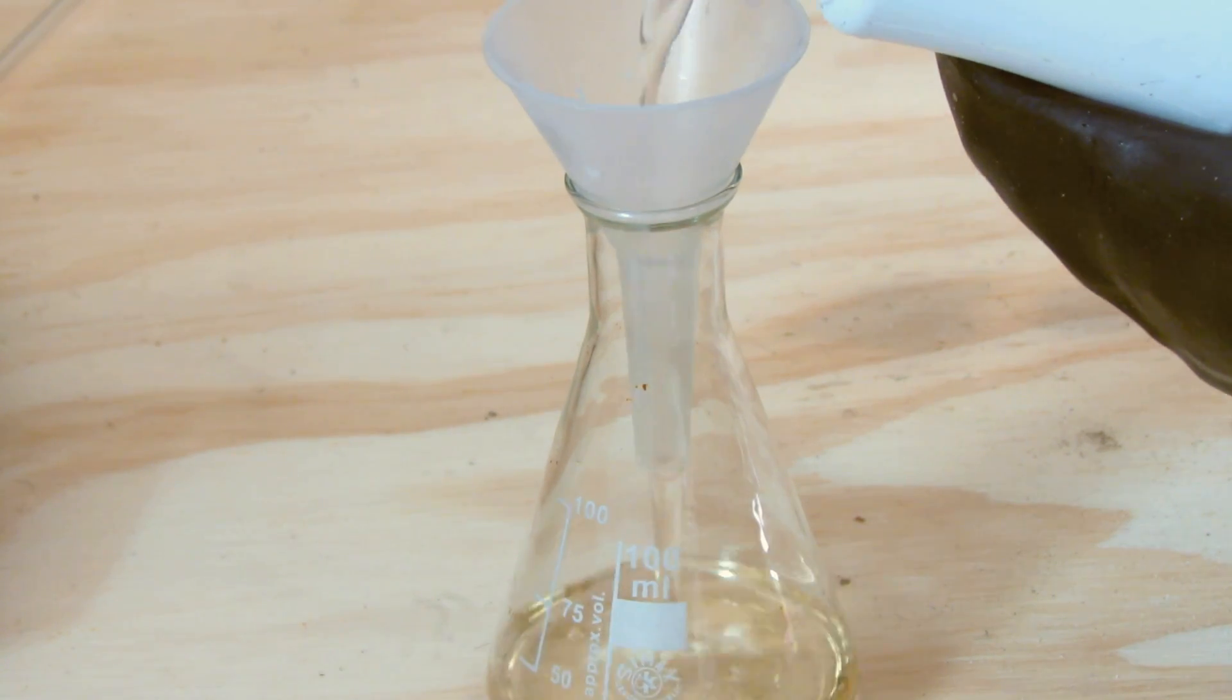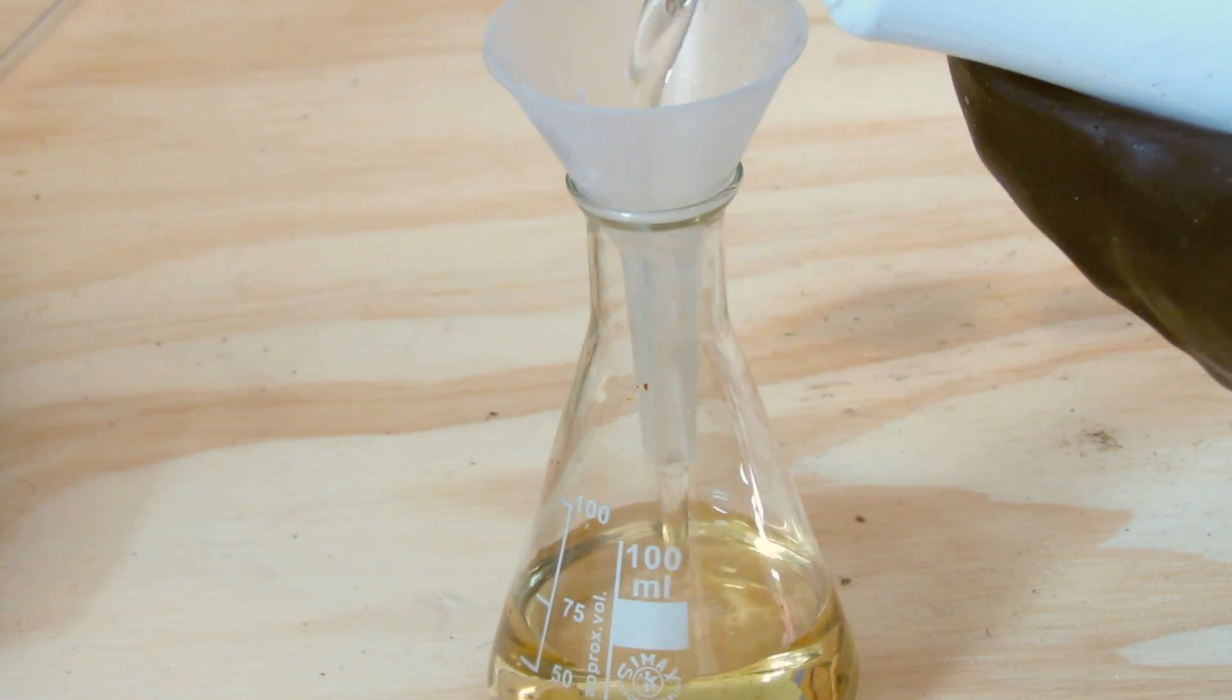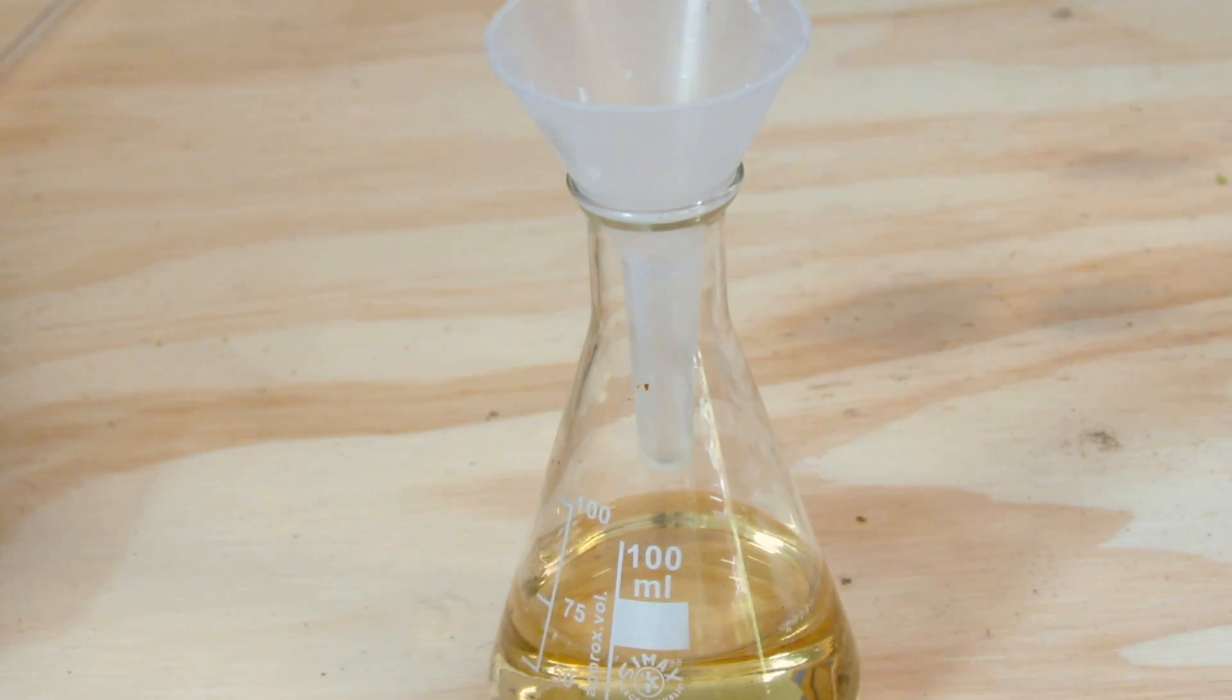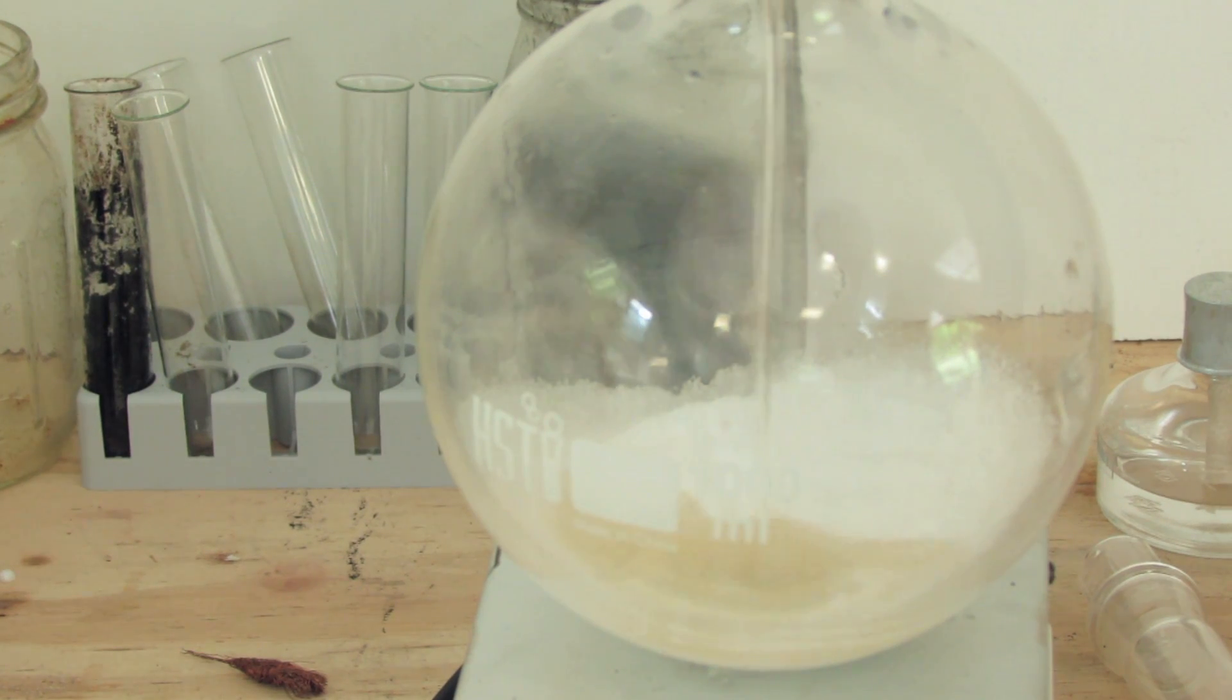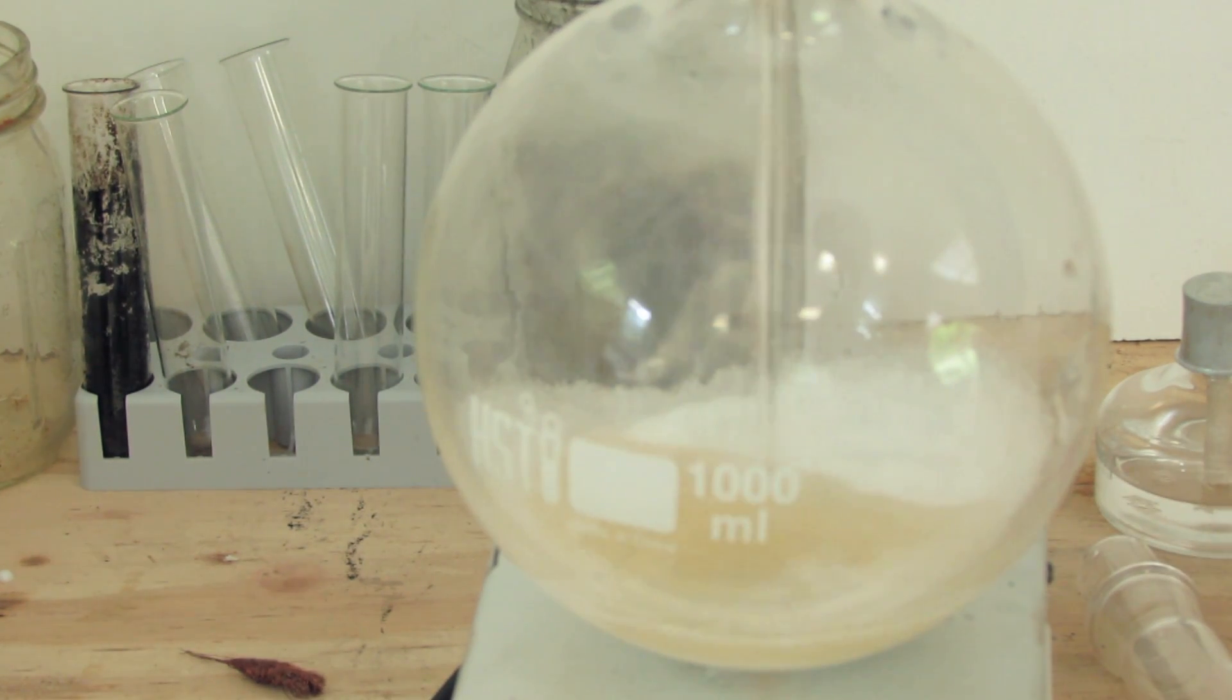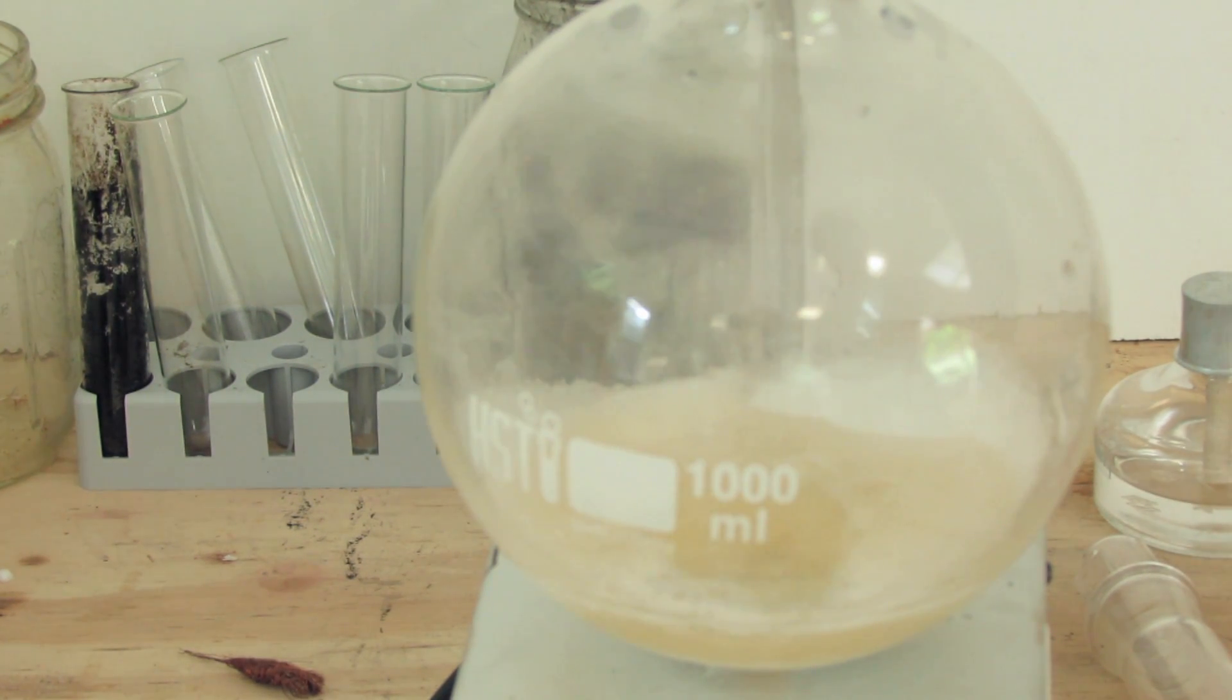Now measure out 65 milliliters of concentrated sulfuric acid. Now in a fume hood or outside, pour the sulfuric acid into the round bottom flask with the potassium nitrate.